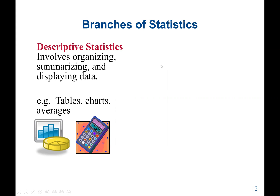Descriptive statistics involves organizing, summarizing, and displaying data. The main goal is to understand our data sets. For example, we may plot a chart, find the average, the median, or the standard deviation. Standard deviation tells us how much the data set values vary — the spread of the values. If a standard deviation is zero, it means all the values are the same.